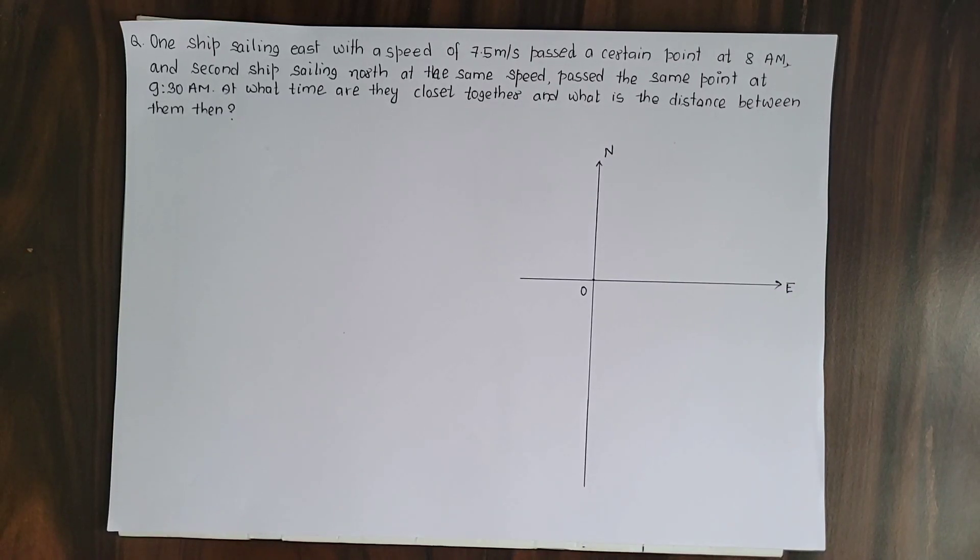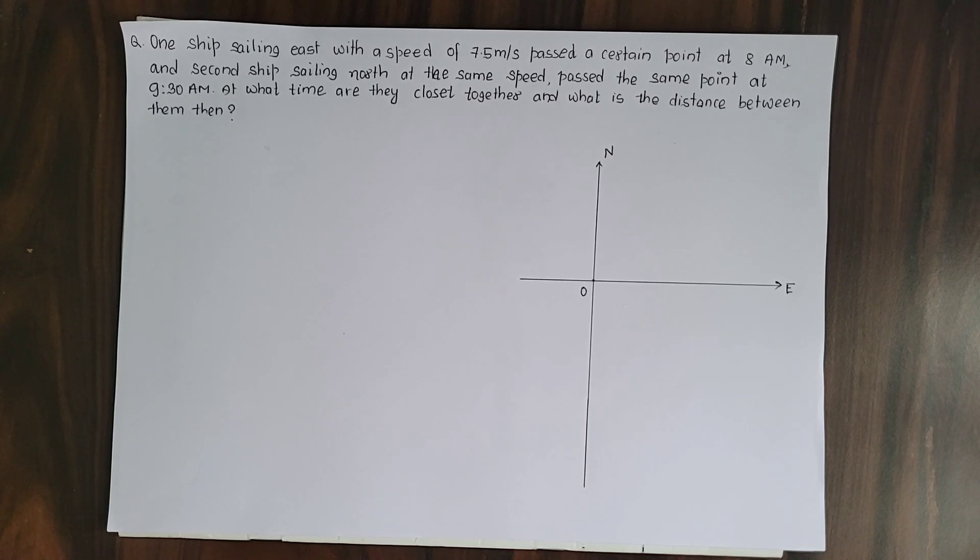Hello students. This is a Class 11 kinematics question. One ship sailing east with a speed of 7.5 meters per second passed a certain point at 8 AM, and a second ship sailing north at the same speed passed the same point at 9:30 AM. At what time are they closest together and what is the distance between them then?